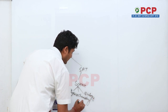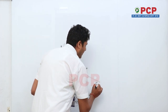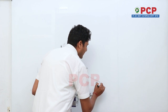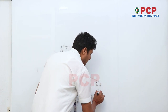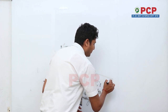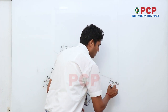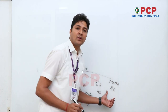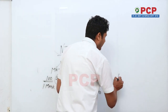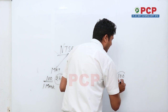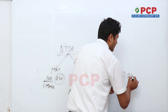In the SAT paper, Science has 40 questions, Social Science has 40 questions, and Mathematics has 20 questions. This paper is 100 questions in total and must be completed in 2 hours. Every year the cut-off is increasing.